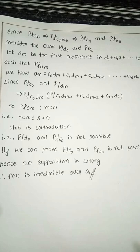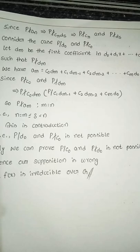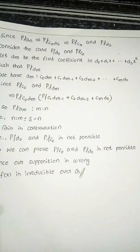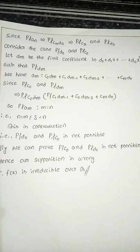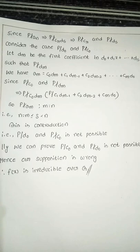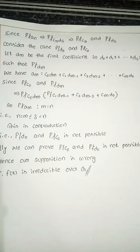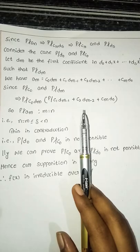Consider the case where p divides d0 and p does not divide c0. Let dm be the first coefficient in d0 + d1·x + ... + ds·x^s such that p does not divide dm. We have am = c0·dm + c1·d(m-1) + c2·d(m-2) + ... + cm·d0. Since p does not divide c0 and p does not divide dm, p does not divide c0·dm, and p divides c1·d(m-1) + c2·d(m-2) + ... + cm·d0. So p does not divide am.